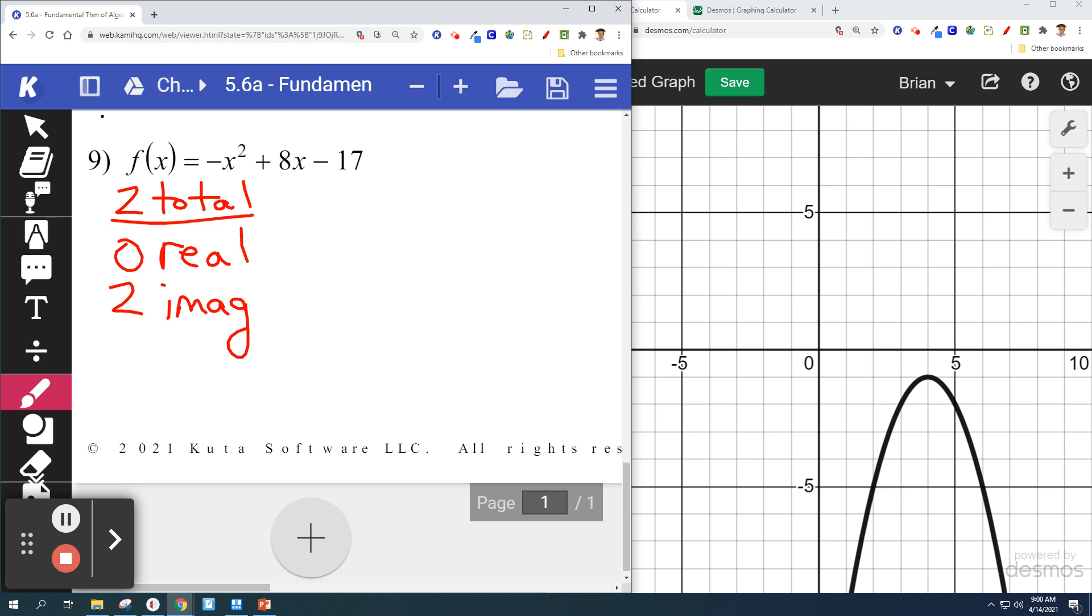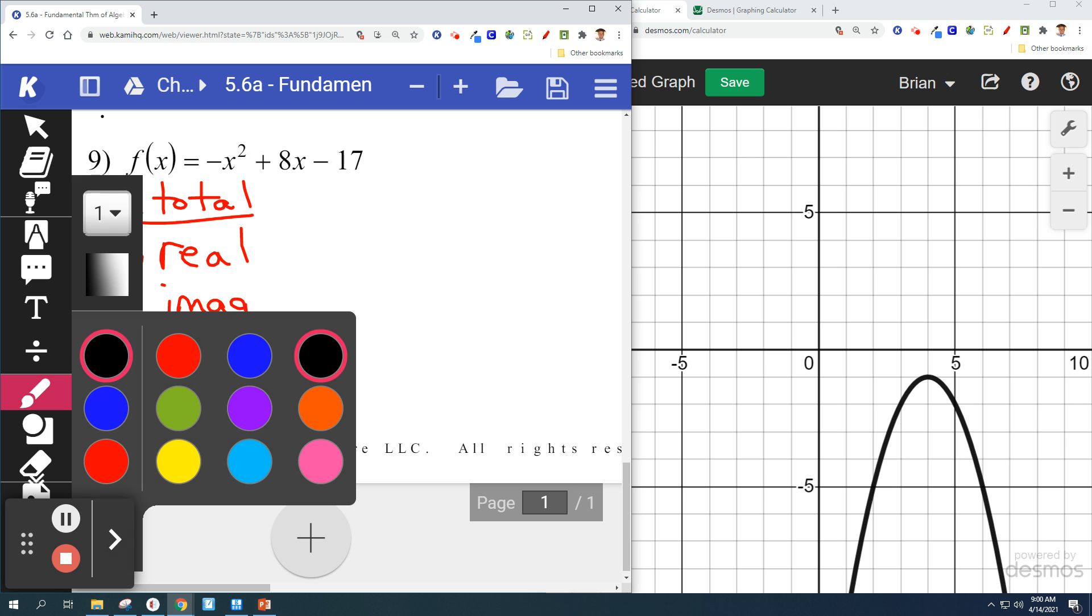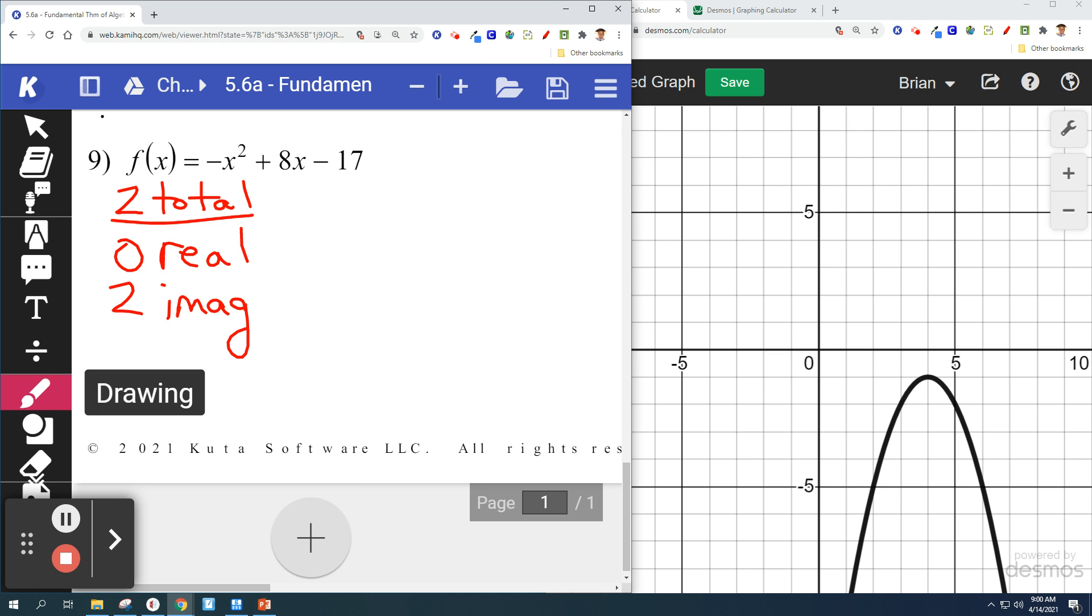So we see the sketch. And there's nothing to label here because there aren't any real solutions. So they're only imaginaries. Now, one last thing to notice. Something that happens to your imaginaries.